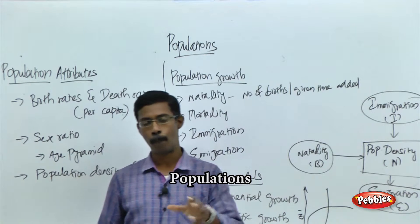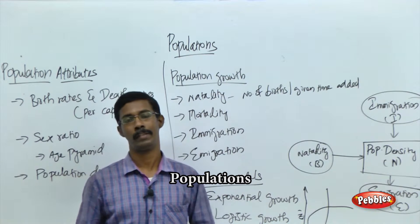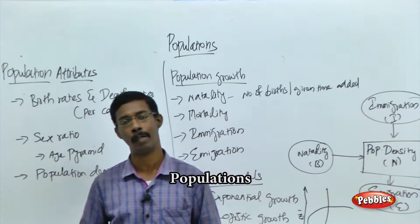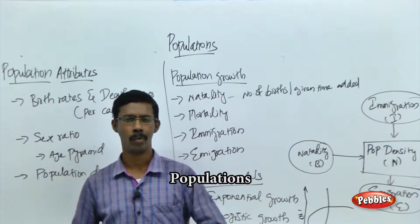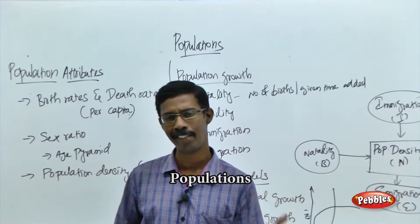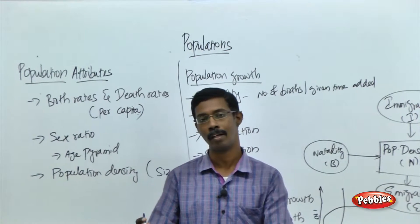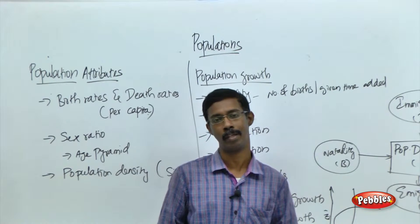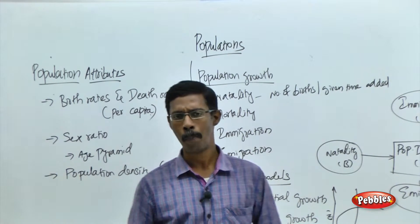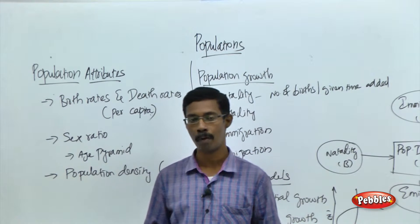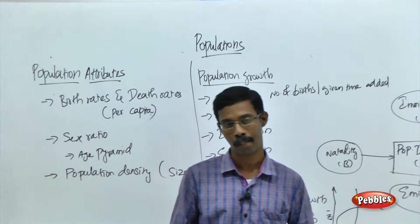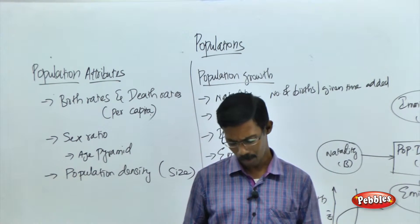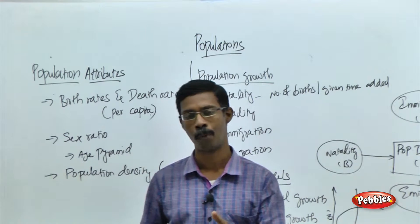We are going to see something called population. What is population? No organism can be isolated or live alone in the particular world. Any living entity depends on some other organisms. They cannot live alone — this is the nature. The population refers to a group of individuals living in a particular habitat or particular environment or particular ecosystem. That is what is called population.